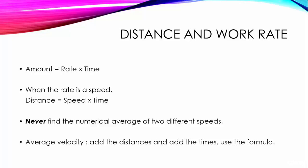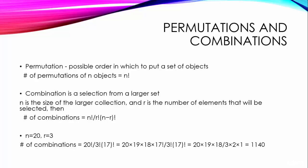When the rate is a rate of work being done, then when two people work together, their combined rate is the sum of their respective individual rates. Permutations and Combinations. A permutation is a possible order in which to put a set of objects.